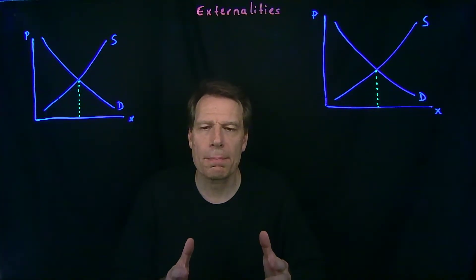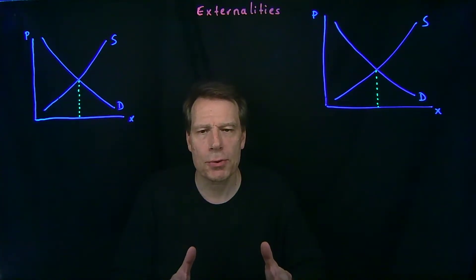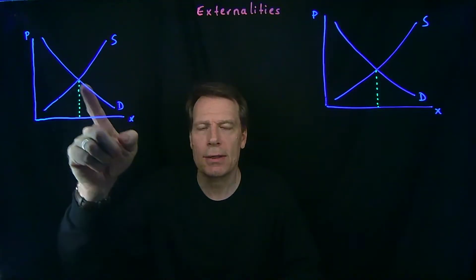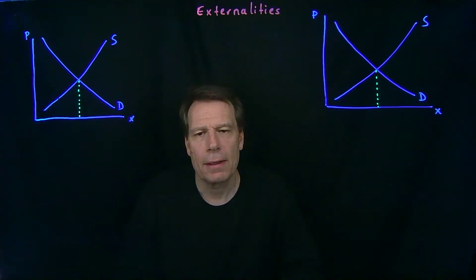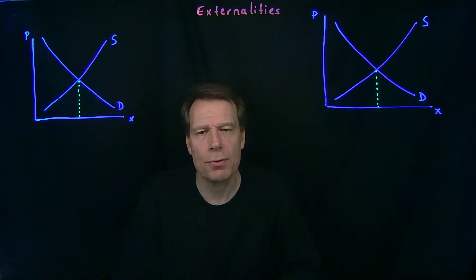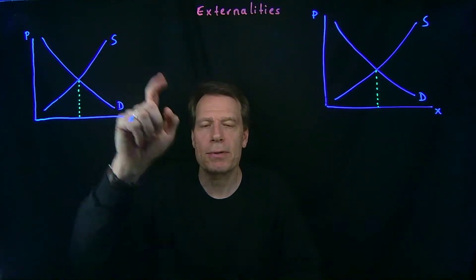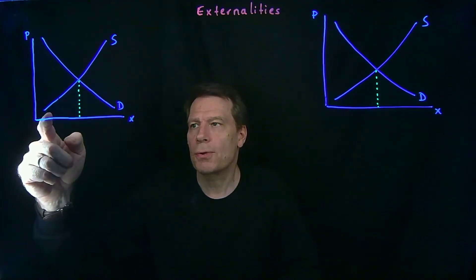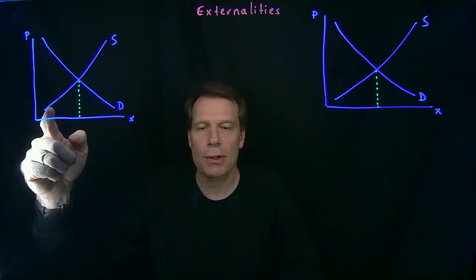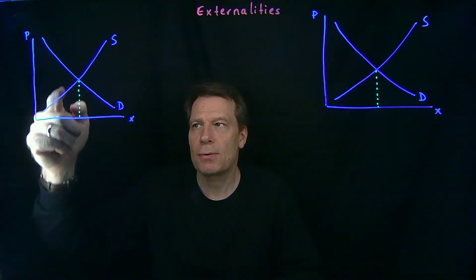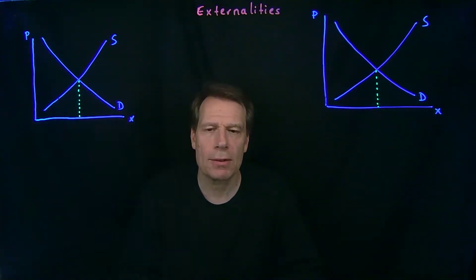We've seen that markets maximize social surplus by producing the equilibrium quantity at the intersection of demand and supply. That's because the demand curve represents the marginal benefits for consumers, and the supply curve represents the marginal costs for firms. So for the first unit that's produced, the marginal cost is lower than the marginal benefit, and so social surplus is produced — the same for the second unit and the third unit, all the way up to that intersection.